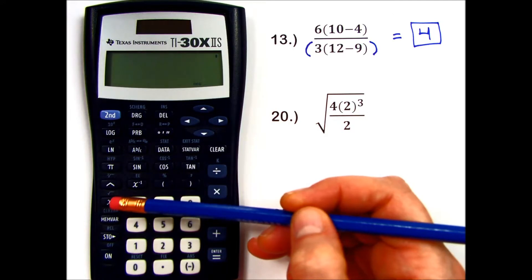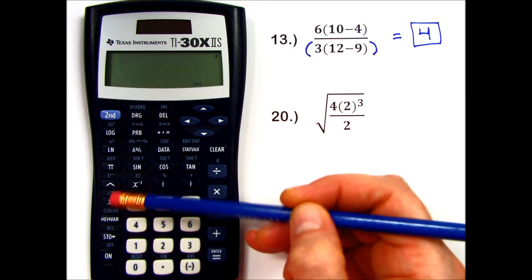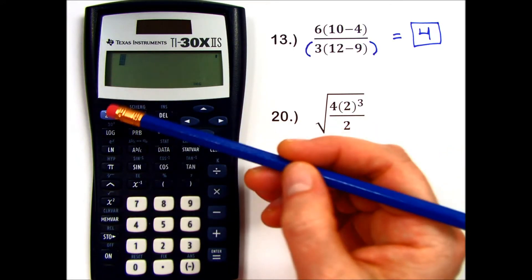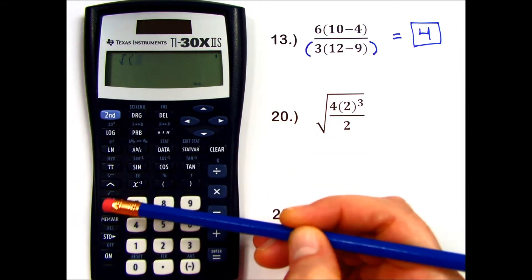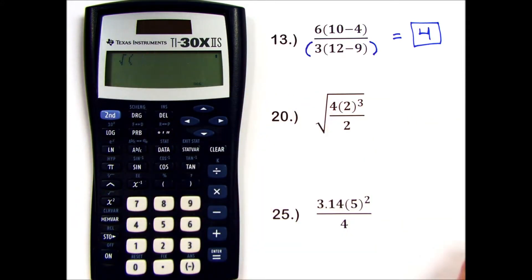It's located printed just above the x squared button, and I tap into it with my second key. Make sure it looks like a square root.